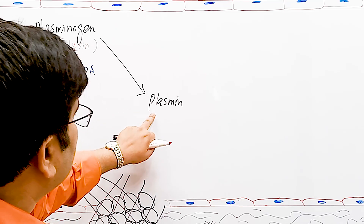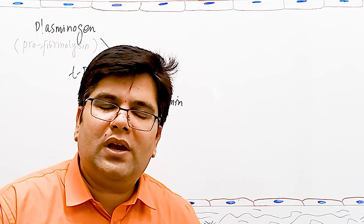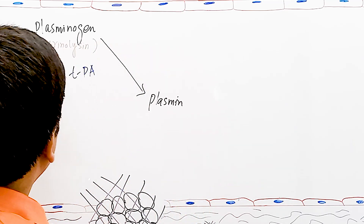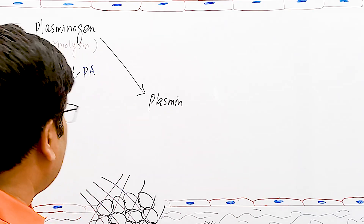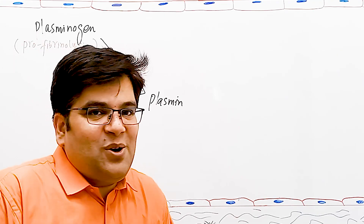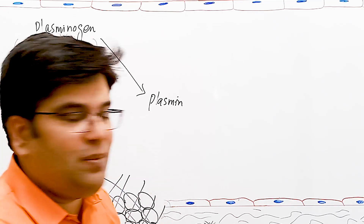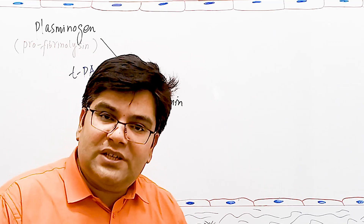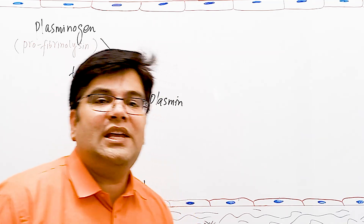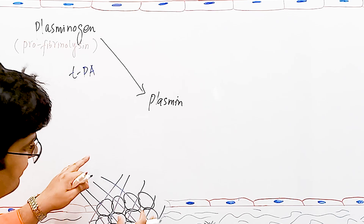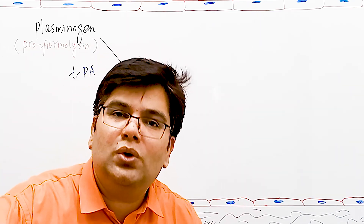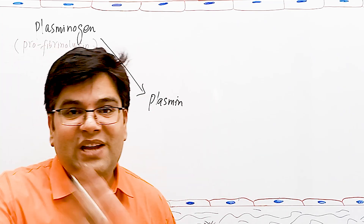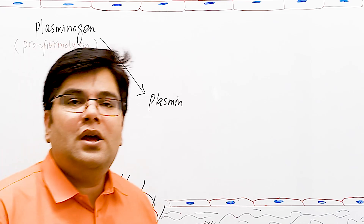This slow release of tPA makes sense because we don't want plasmin to be produced very quickly after tissue injury. If plasminogen were rapidly converted to plasmin, plasmin would break the fibrin clot before bleeding could be stopped. Time must be given for the clot to form first, and then the clot is broken slowly after some days when the vessel starts healing. This is why it is important for tPA to be released slowly from the damaged tissue and endothelium.